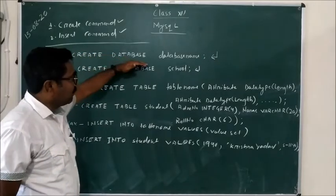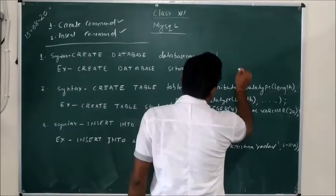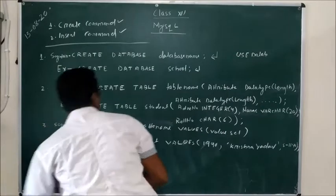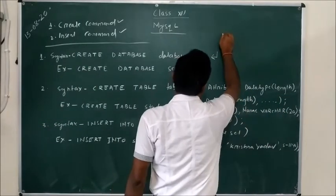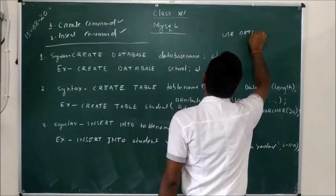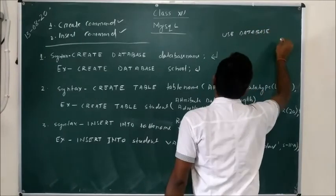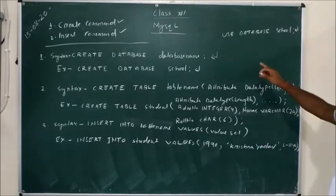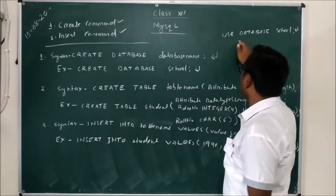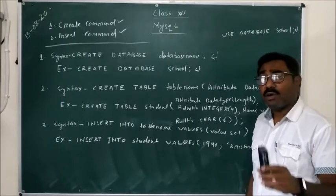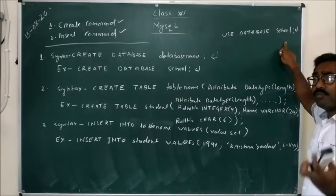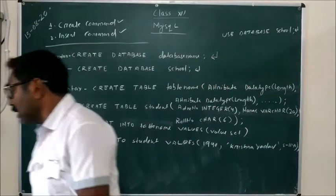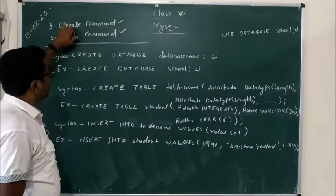Once you have created a database, you have to use another command: USE DATABASE followed by the database name — in our case, USE DATABASE school. After running this, it will show a 'database changed' message, meaning you have entered your database. Now you can create tables, views, or do anything within that database.